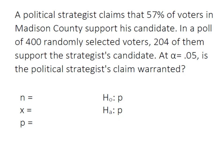A political strategist claims that 57% of voters in Madison County support his candidate. In a poll of 400 randomly selected voters, 204 of them support the strategist's candidate. At an alpha equal to 0.05, is the political strategist's claim warranted?